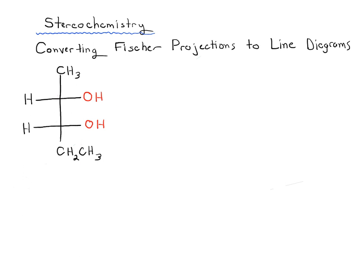Fisher projections are a little bit more esoteric than line diagrams, so this is understandable why you might want to do this. Instead of doing a lot of bond rotations — which is one recommended way — I think it's easier to use what we're going to call the RS method.